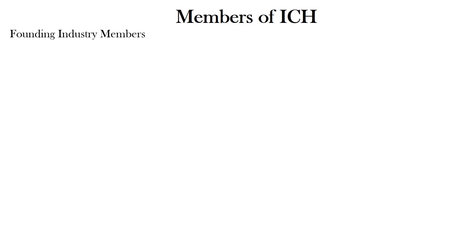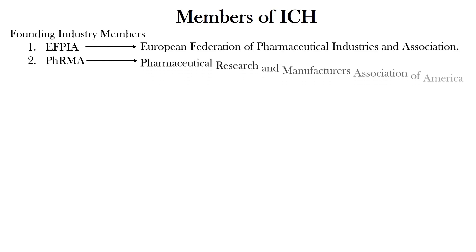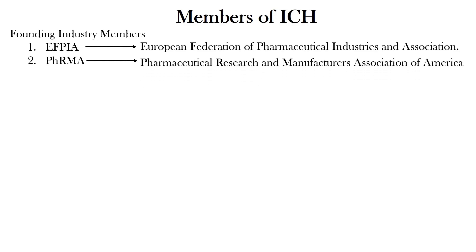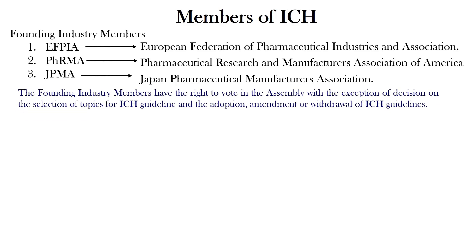Coming to the founding industry members: like founding regulatory members, there are three founding industry members of the ICH. These are EFPIA, that is the European Federation of Pharmaceutical Industries and Associations; PhRMA, that is the Pharmaceutical Research and Manufacturers Association of America; and JMPA, that is the Japan Pharmaceutical Manufacturers Association. The founding industry members have the right to vote in the assembly, with the exception of decisions on the selection of topics for ICH guidelines and the adoption, amendment, or withdrawal of ICH guidelines.